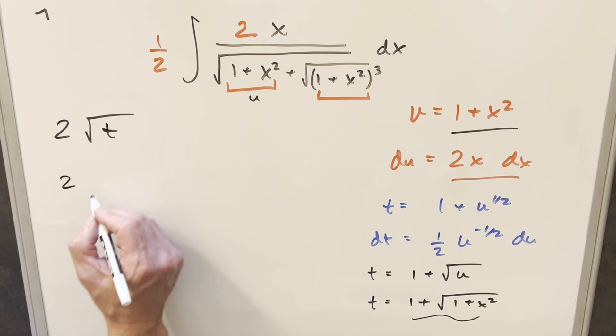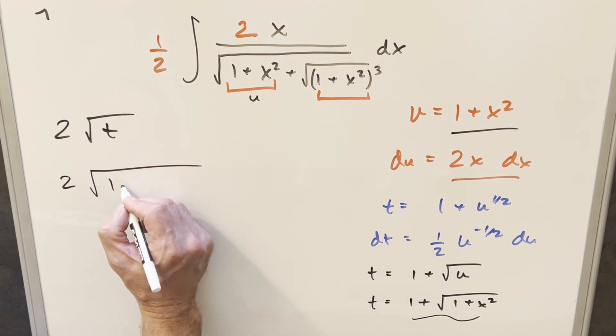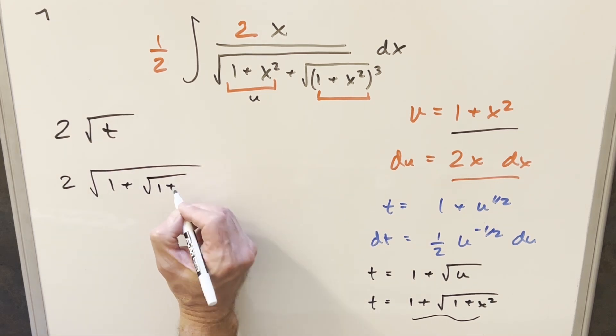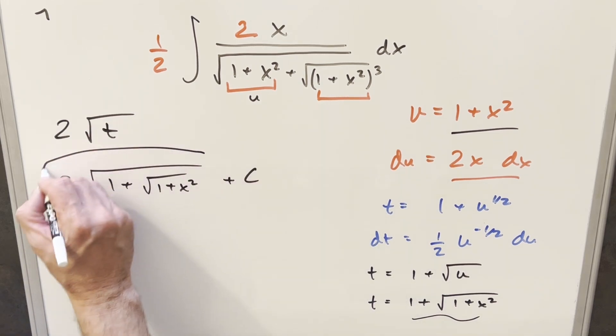And so for my final solution to this, we have 2 square root of 1 plus square root of 1 plus x squared. Add a plus c on the end, and that's it.